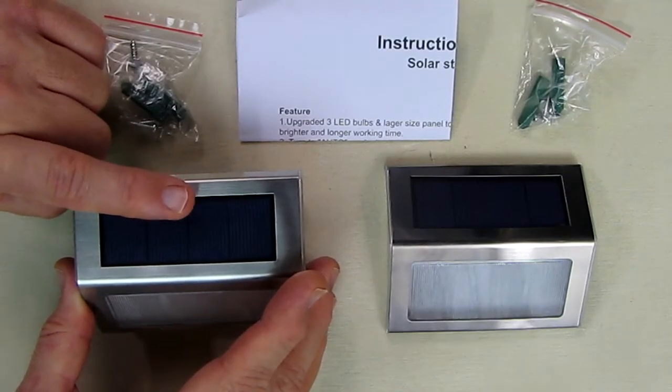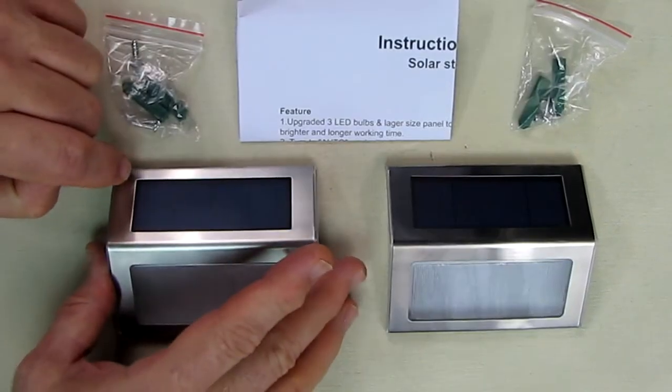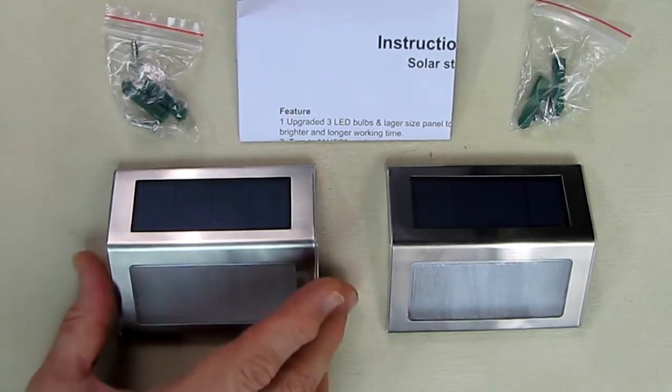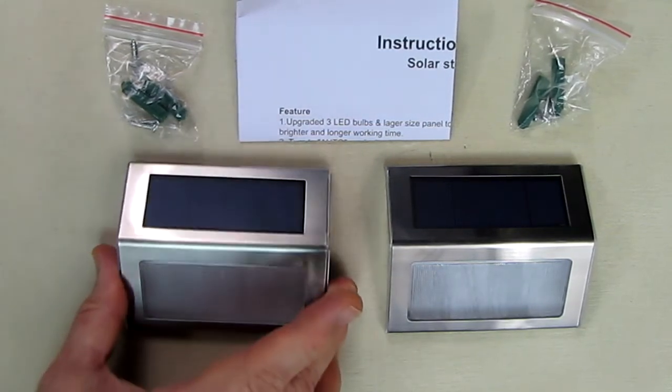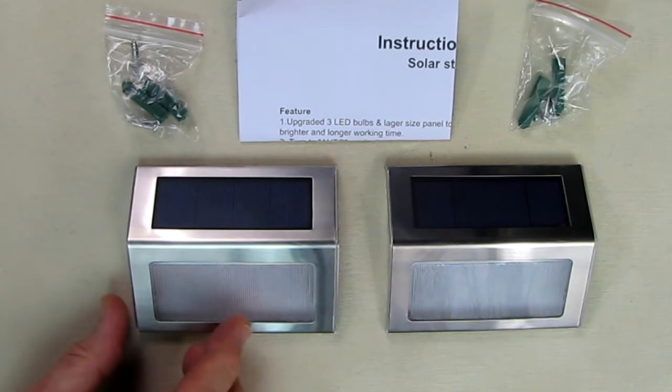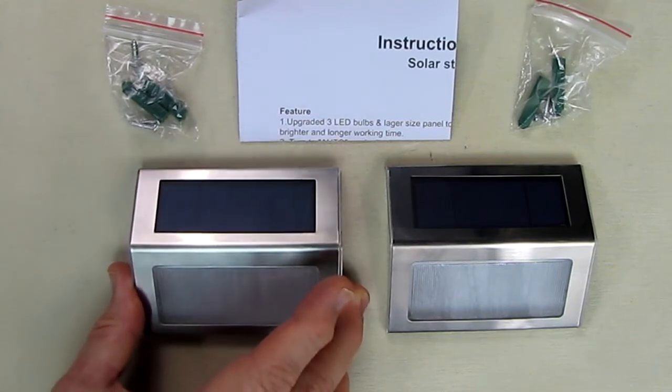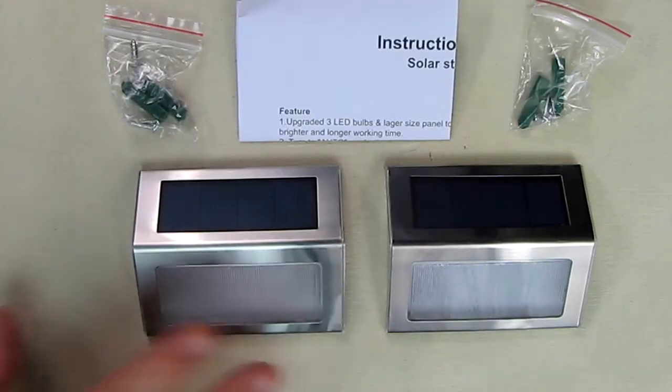This is two volts at 120 milliamp hours in full sunlight, which is pretty strong. Internally, this has a larger nickel metal hydride battery. A lot of them use 600 milliamp hour; this uses 1000 milliamp hour, so it's going to last longer from dusk through night. This will fully charge in about six to eight hours and automatically turns on and off from dusk to dawn using a sensor.